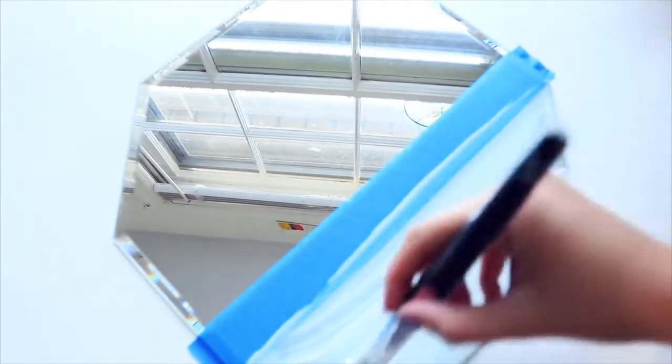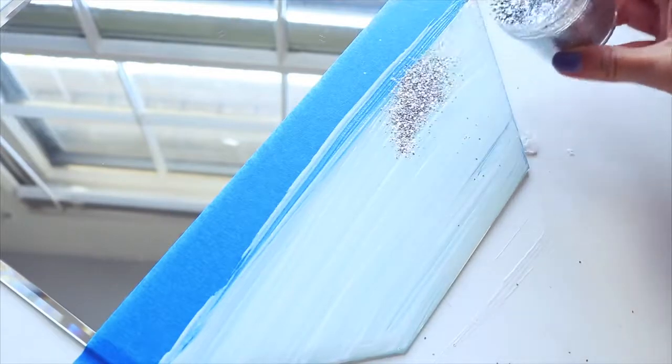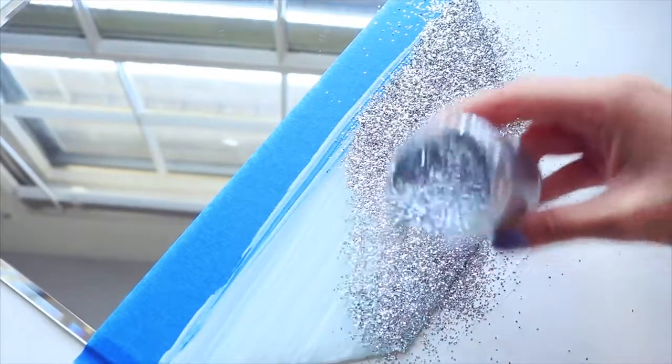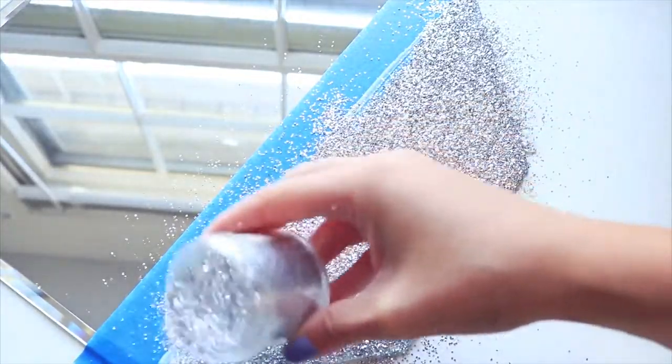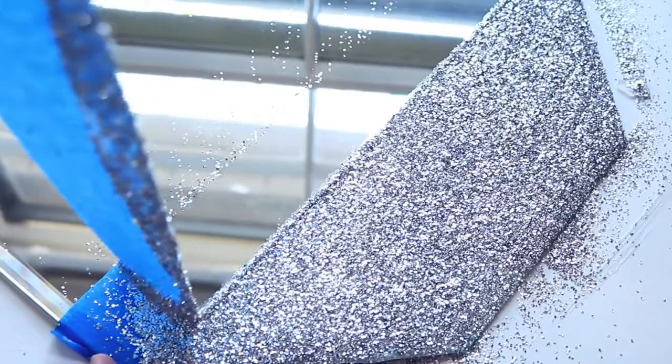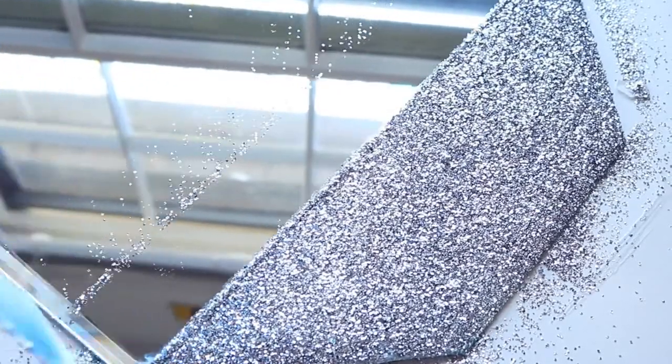I went ahead and added Mod Podge to the area I wanted to use the glitter on and shook the glitter on top of the mirror, applying a huge coat of it just to make sure it was all covered. Don't let this dry too long before you peel the tape off otherwise a lot of the glitter might come off.